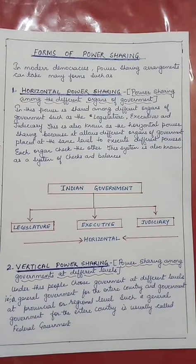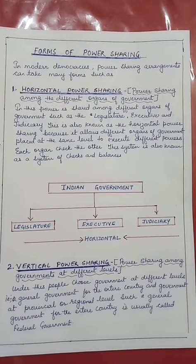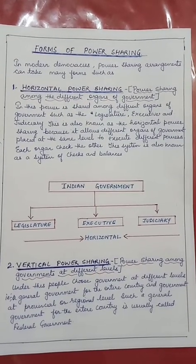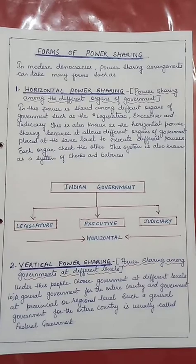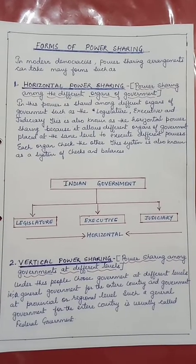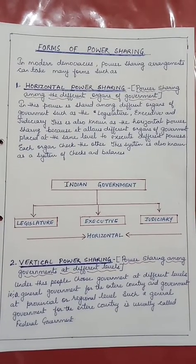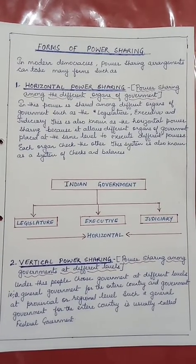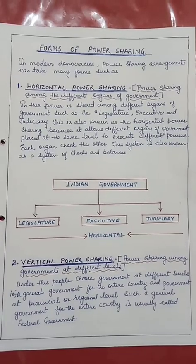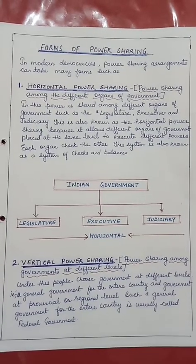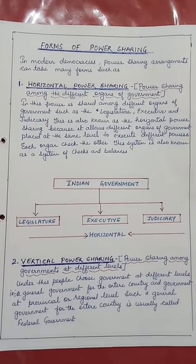For example, the judges are appointed by the executive, but they can check the functioning of the executive or laws made by the legislature. This arrangement is also called a system of checks and balances.